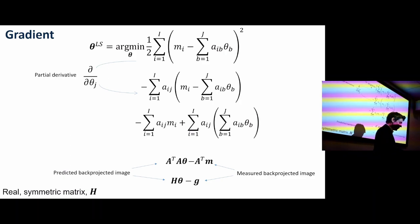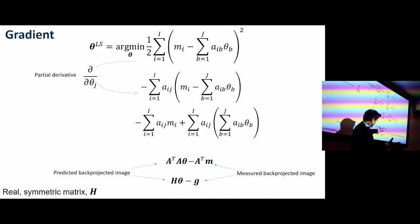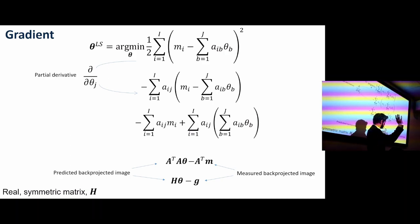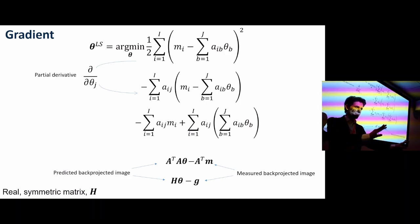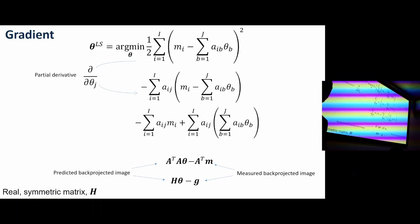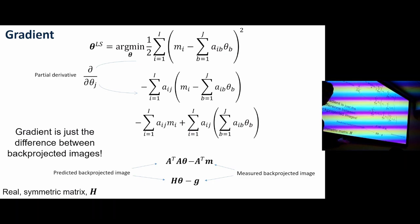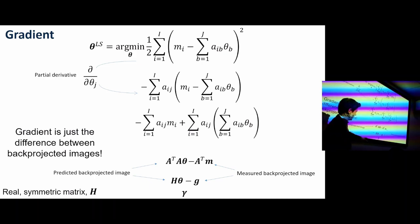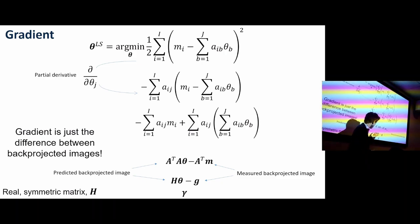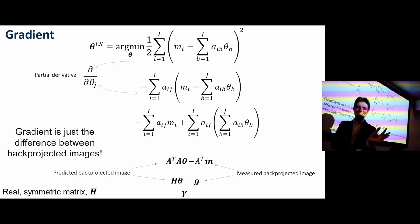The gradient of the least-squares cost function is saying: if I have some candidate image and I've got some data M, I can find the gradient by forward-projecting my image, back-projecting it, then looking at how different that is to if I just back-project my measured data. The gradient is just the difference between back-projected images. I'm going to call that a vector gamma, which is an image. If I forward-project an image and back-project it, I've got an image; if I back-project my measured data, I've got an image. A difference of images is an image. So my gradient, my search direction, is an image.